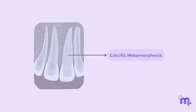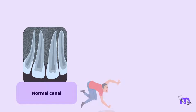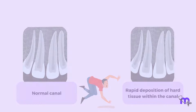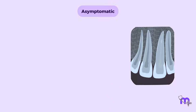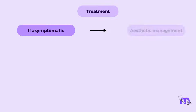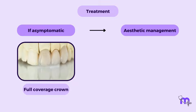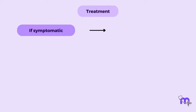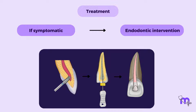Such calcific degeneration is called calcific metamorphosis. It is a pulpal response to trauma, characterized by rapid deposition of hard tissue within the canal space. The tooth is mostly asymptomatic, except discoloration may be observed. In these cases, aesthetic management using full-coverage crowns or laminates can be done. In cases where symptoms are observed radiographically or clinically, endodontic intervention is necessary.